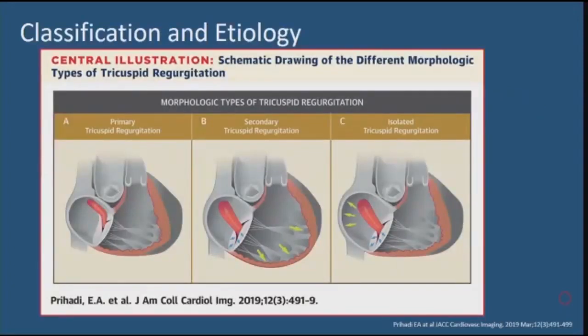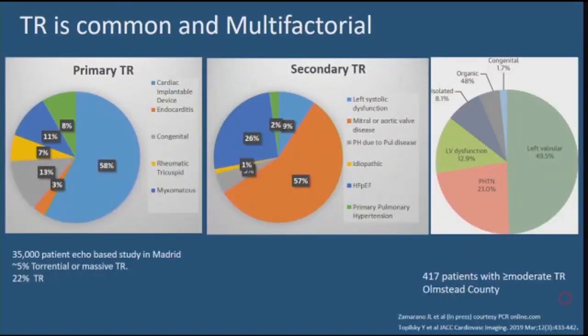Tricuspid regurgitation can either be primary, due to a disorder of the leaflets or the subvalvular apparatus, or secondary, due to tricuspid annular changes in response to changes in the right ventricle. Isolated tricuspid regurgitation refers to TR specifically due to annular changes in response to changes in the right atrium, and tends to happen with atrial fibrillation. An echocardiographic-based study from Madrid, Spain looked at about 35,000 echocardiograms and found about 22% had tricuspid regurgitation.